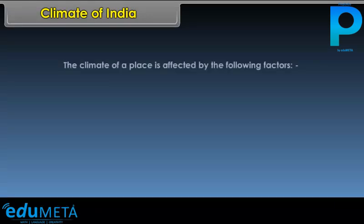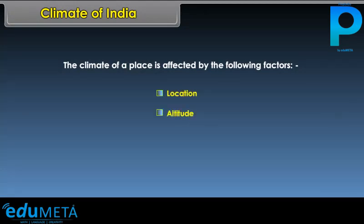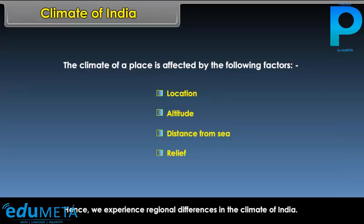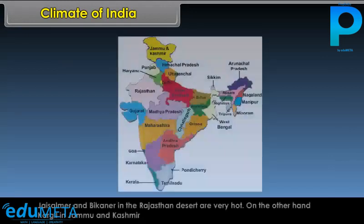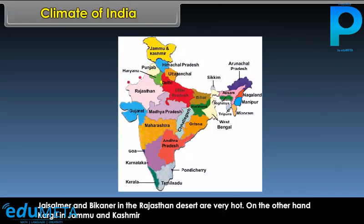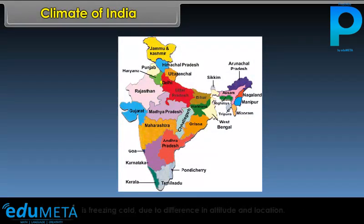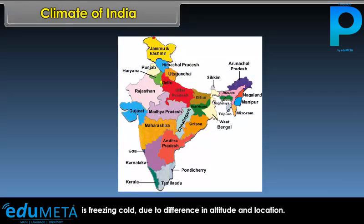The climate of a place is affected by location, altitude, distance from sea, and relief. Hence, we experience regional differences in the climate of India. Jaisalmer and Bikaner in the Rajasthan desert are very hot, while Kargil in Jammu and Kashmir is freezing cold due to difference in altitude and location.